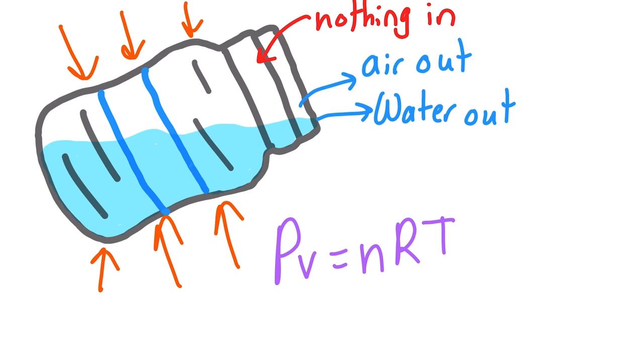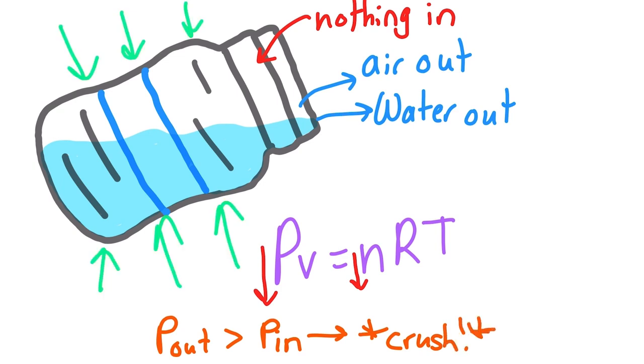This creates a vacuum inside the bottle or a region of lower pressure, which means that the pressure outside of the bottle is higher. This causes the bottle to crush in until the volume of the water bottle is small enough so that for the number of air molecules left inside of the bottle at that temperature, the pressure inside is the same as the pressure outside. At that point, the bottle stops crushing until you drink more.